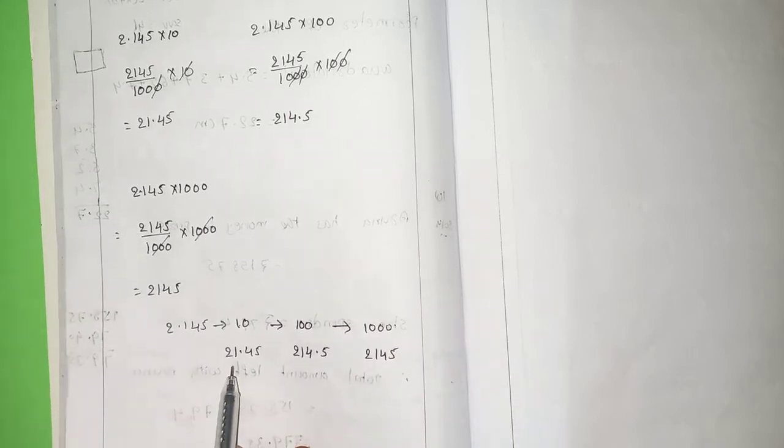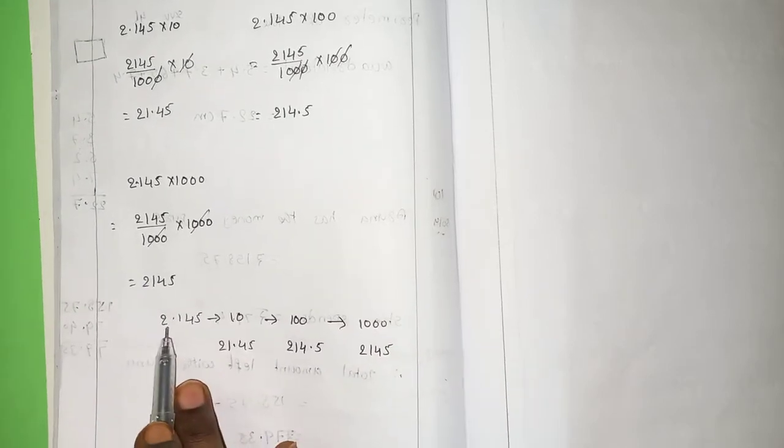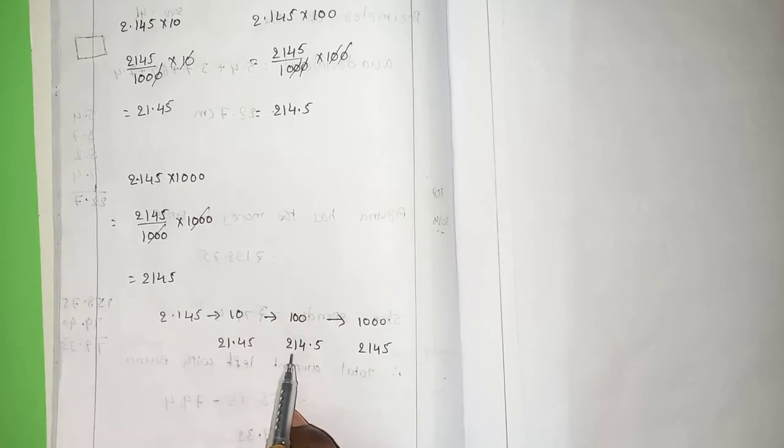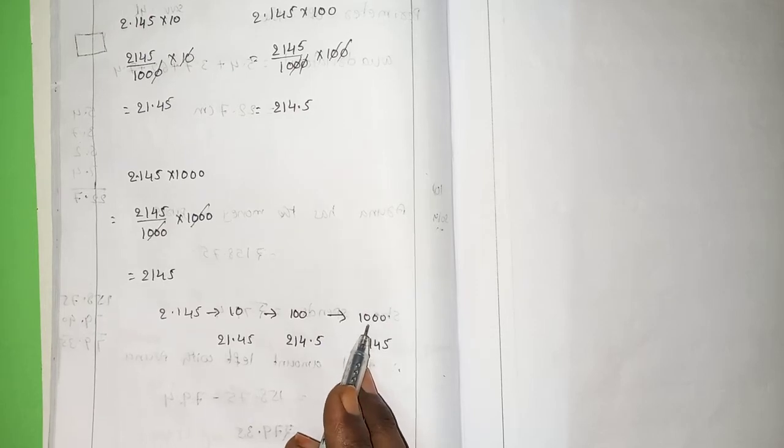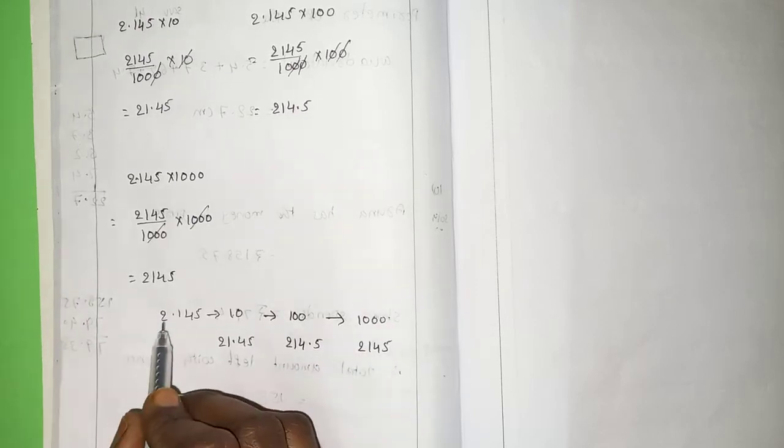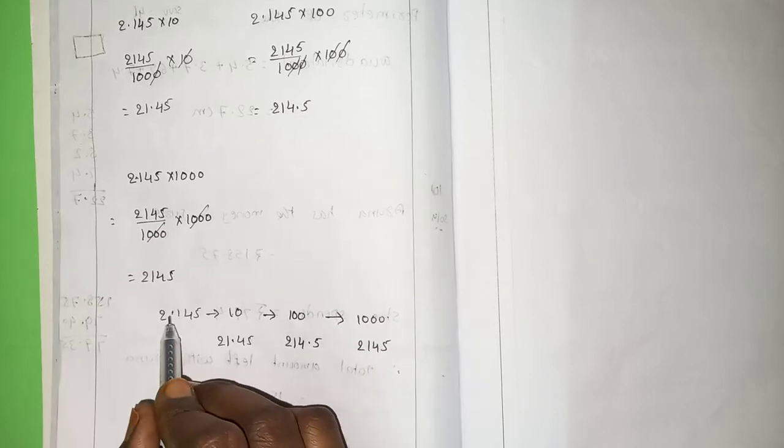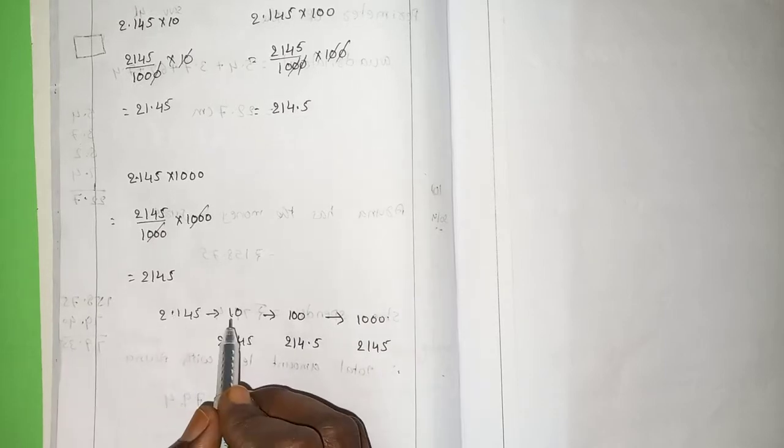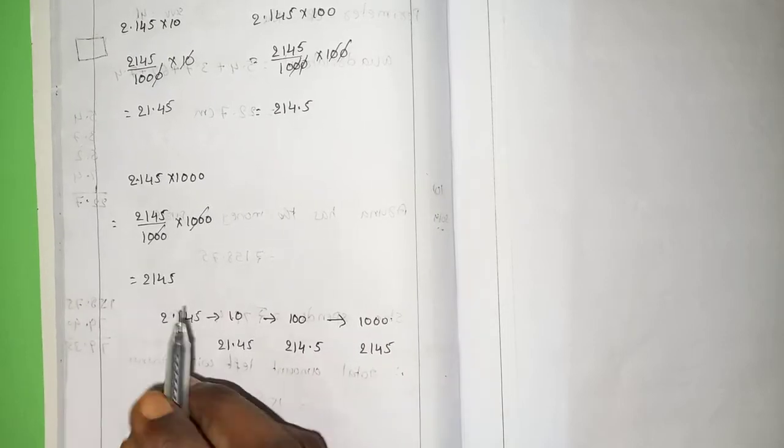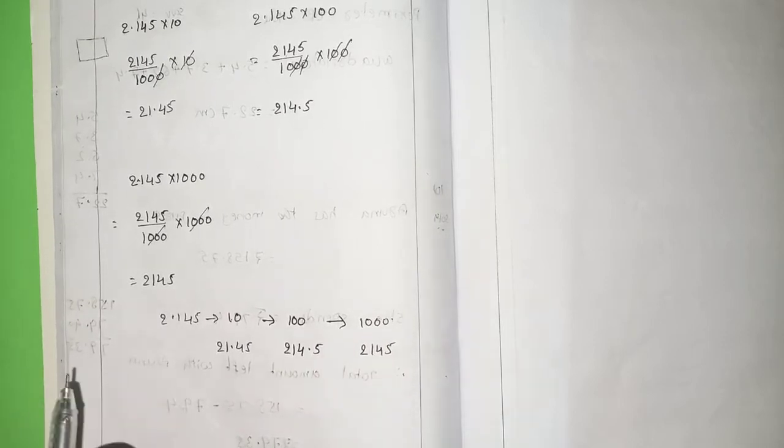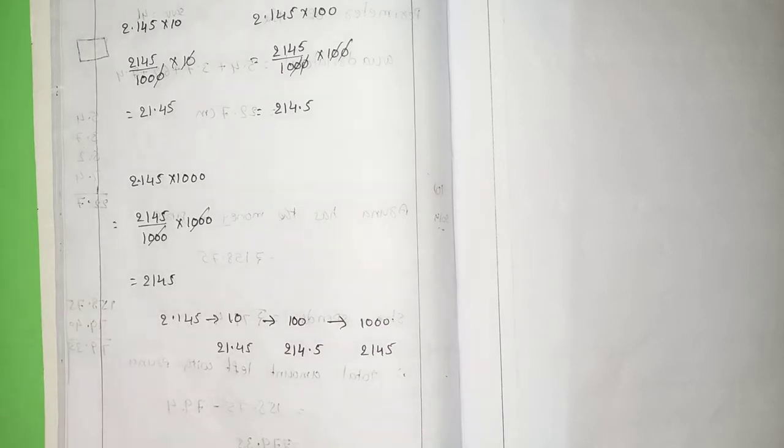So, the number of zeros is going to add that many number of positions, the dot is moving to the right side. 2 becomes 21 when you multiply with 10. 2 becomes 100 when you multiply with 100. 2 becomes 2000 when you multiply with 1000. It is based on the place value, based on the point position.